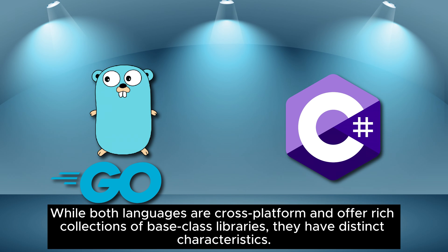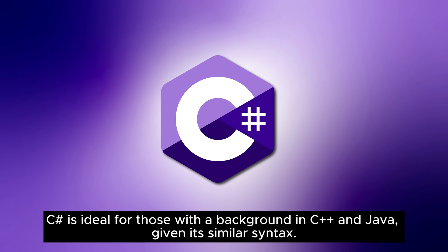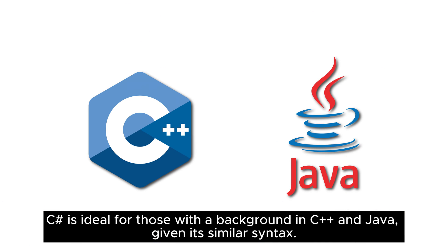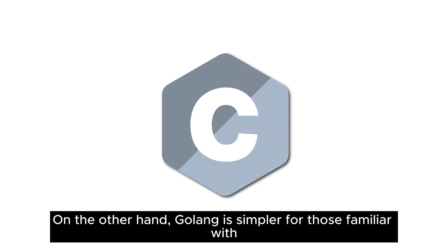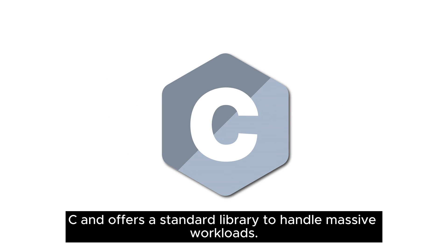Similarities and differences between Golang and C-sharp: while both languages are cross-platform and offer rich collections of base-class libraries, they have distinct characteristics. C-sharp is ideal for those with a background in C++ and Java, given its similar syntax. On the other hand, Golang is simpler for those familiar with C, and offers a standard library to handle massive workloads.